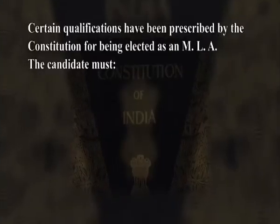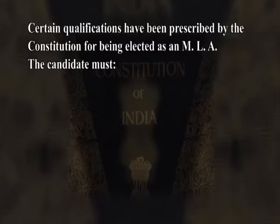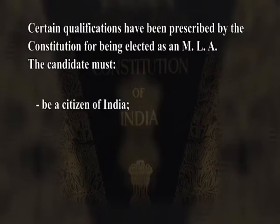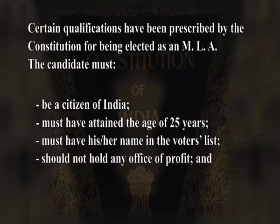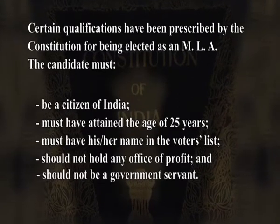As per constitutional provision, the legislative assembly shall not have more than 500 members and not less than 60 members. However, very small states like Goa, Sikkim, and Mizoram have been allowed to have less than 60 members. The legislative assembly is an elected body; its members are elected by the people based on the principle of universal adult franchise. Certain qualifications prescribed by the constitution for being elected as an MLA include: the candidate must be a citizen of India, must have attained the age of 25 years, must have his or her name in the voter list, should not hold any office of profit, and should not be a government servant.